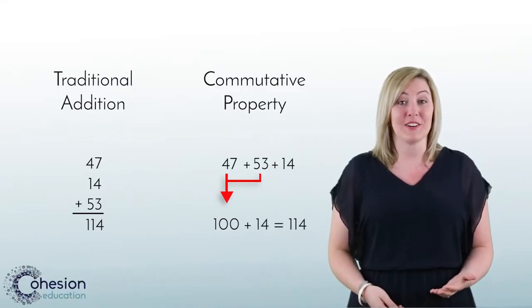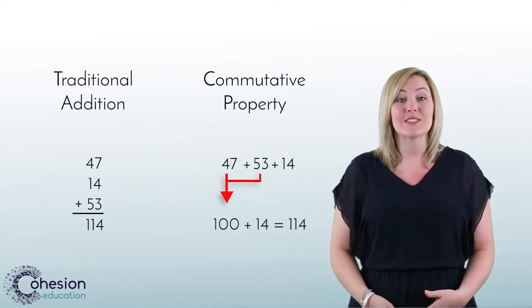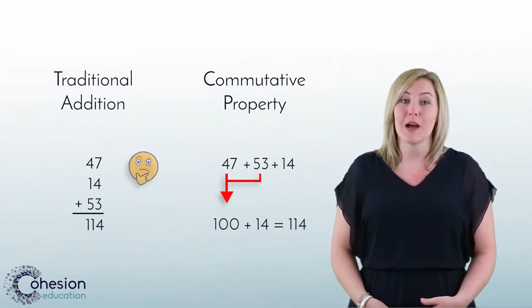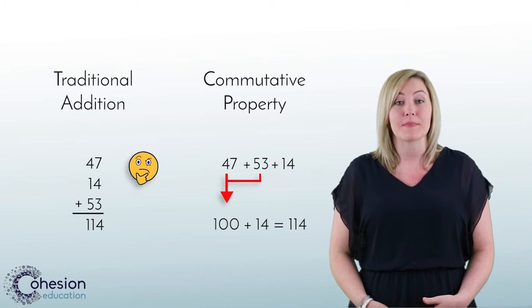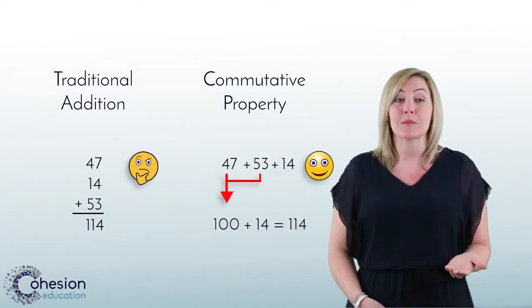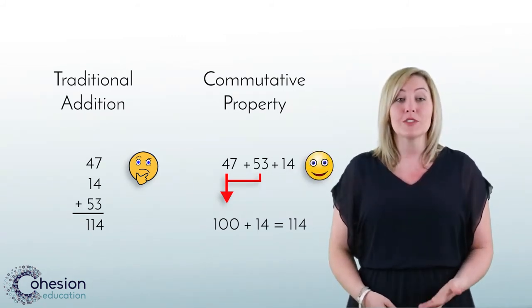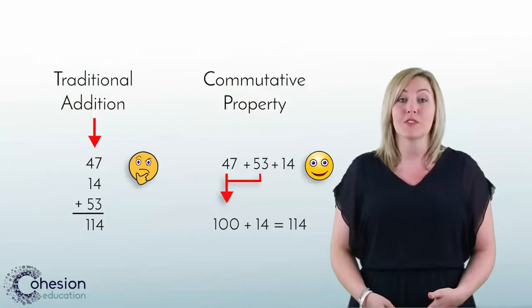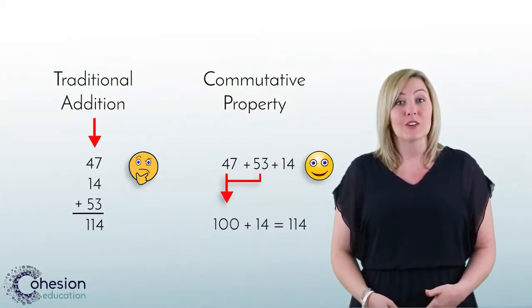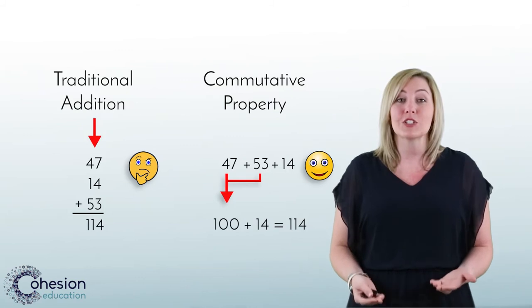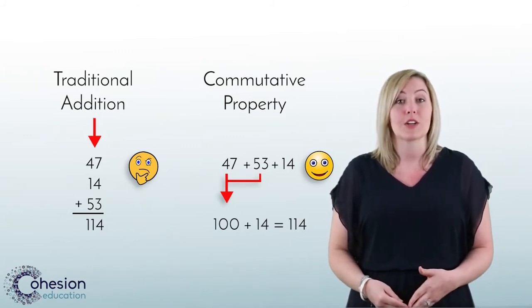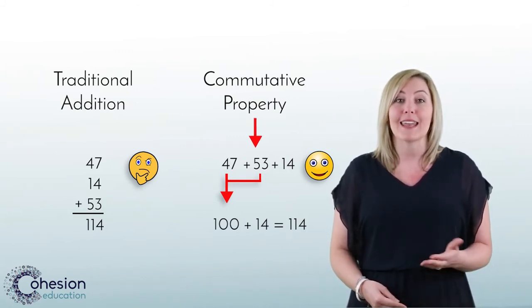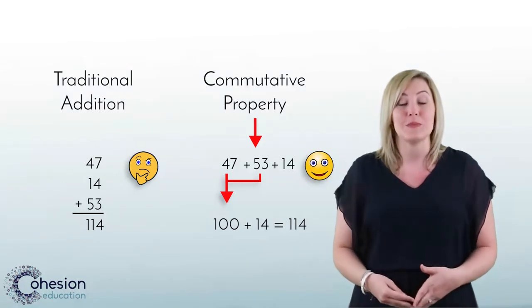A common error that can occur when using the properties is that students do not use them and will solve the problem the longer or traditional way. Take the example we used the commutative property on. Some students will simply add up these numbers vertically. This method is not incorrect to get the answer but does not show understanding of the properties. Remember, the properties make adding and multiplying easier to do mentally.